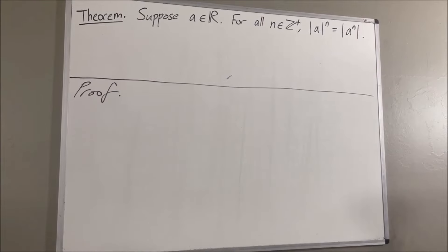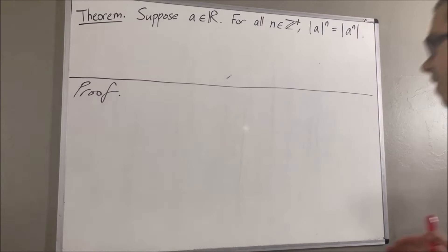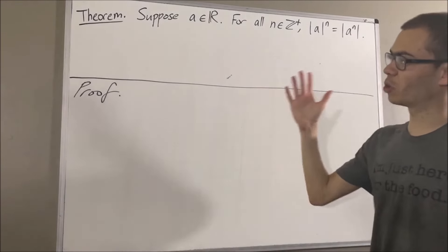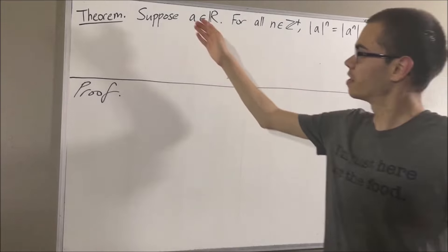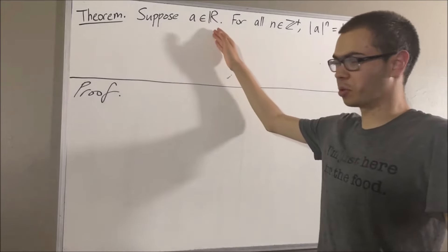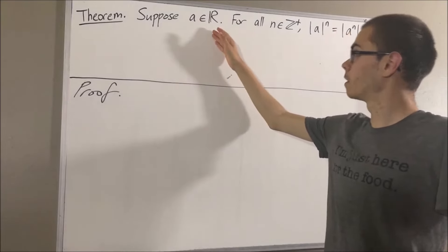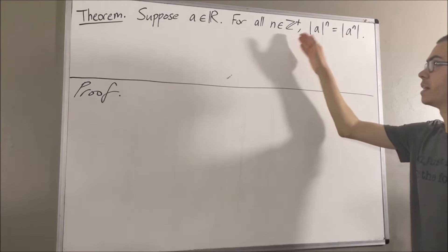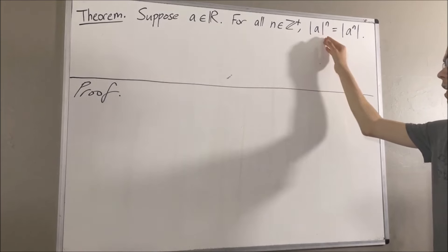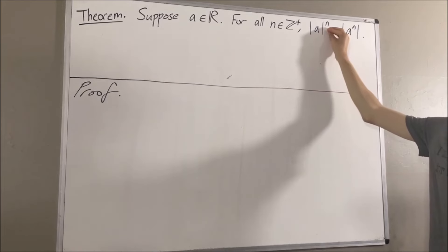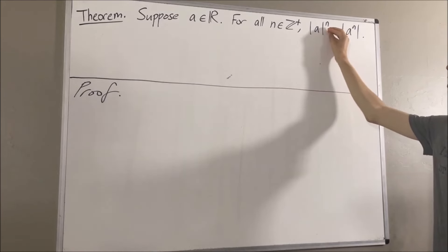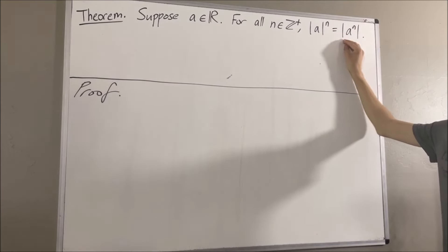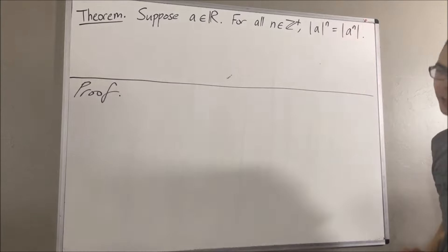Hello! In this video, we are going to prove the following theorem. Suppose a is a real number. For all positive integers n, the absolute value of a to the power of n is equal to the absolute value of a, to the power of n.